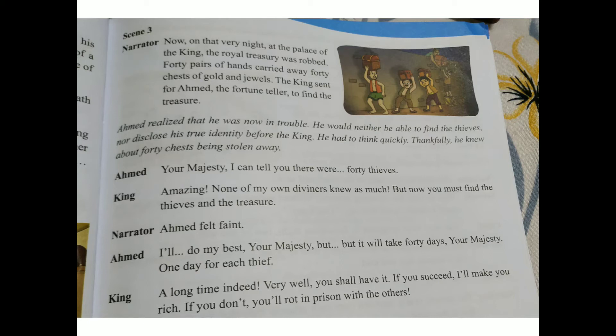On the next day, forty thieves had stolen forty chests of gold and jewellery from the palace. The king came to know about Ahmed and called him to find out who the forty thieves were. Ahmed realized his mistake — he thought he was in very big trouble. Ahmed said: 'Your majesty, I can tell you there were forty thieves.' He boldly said forty thieves because he knew that forty chests had been stolen.